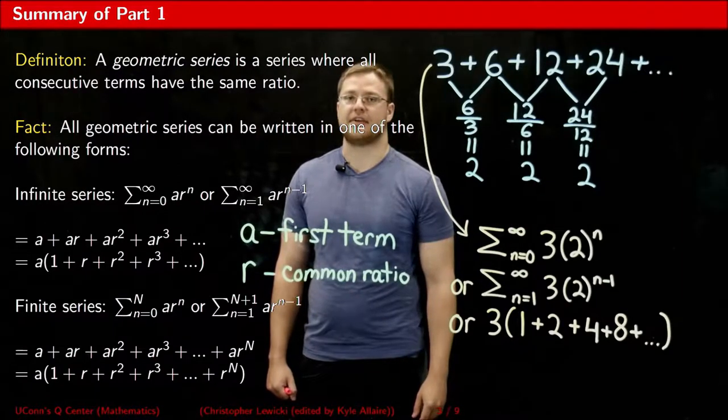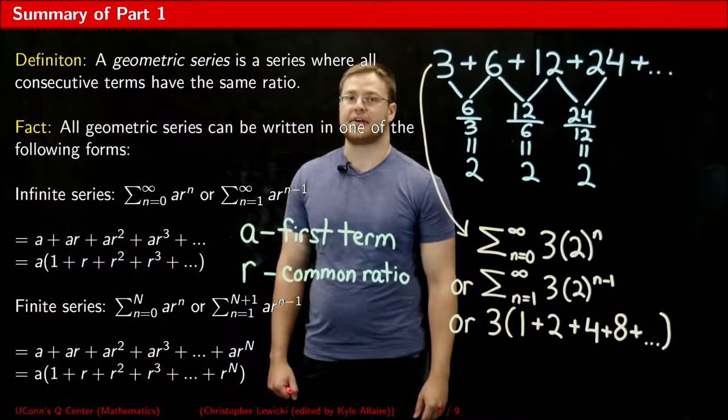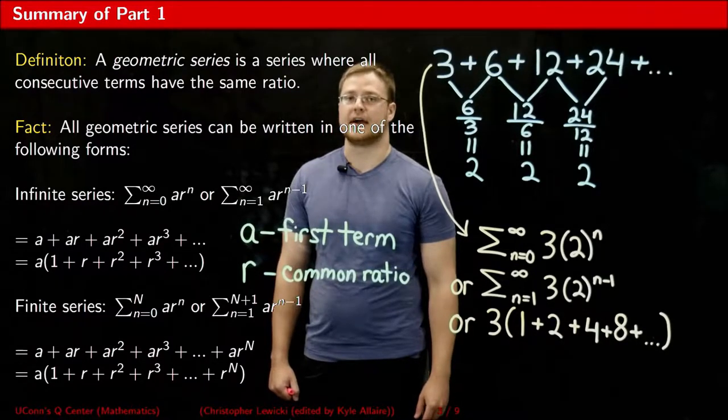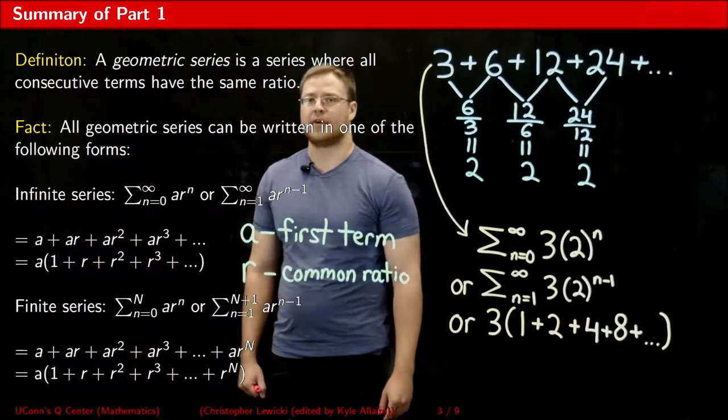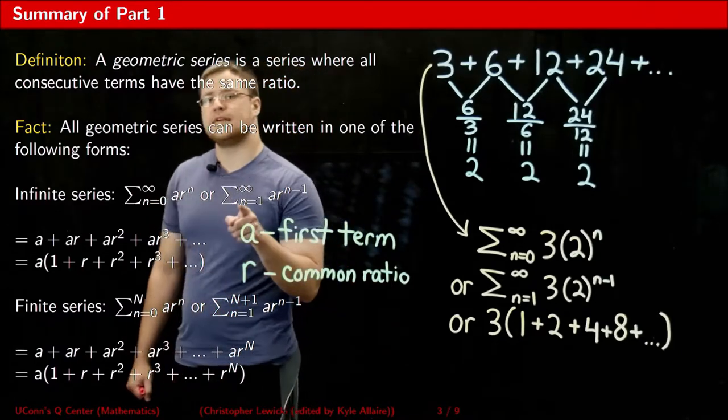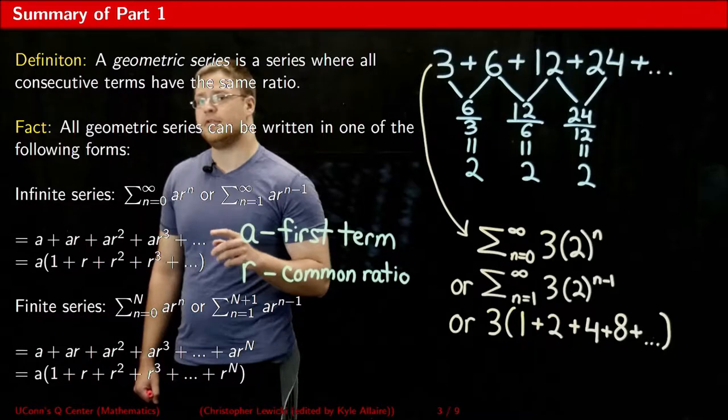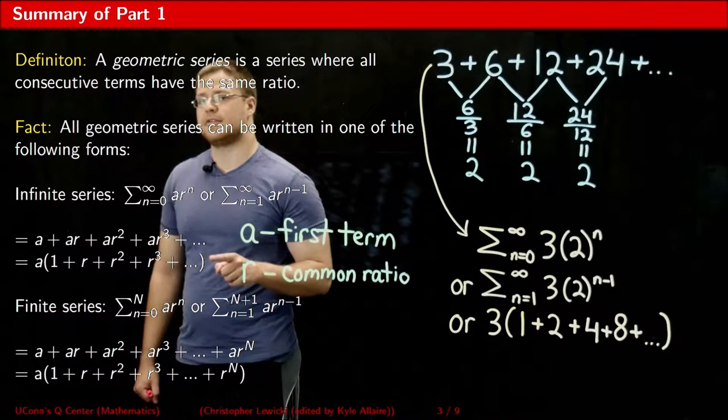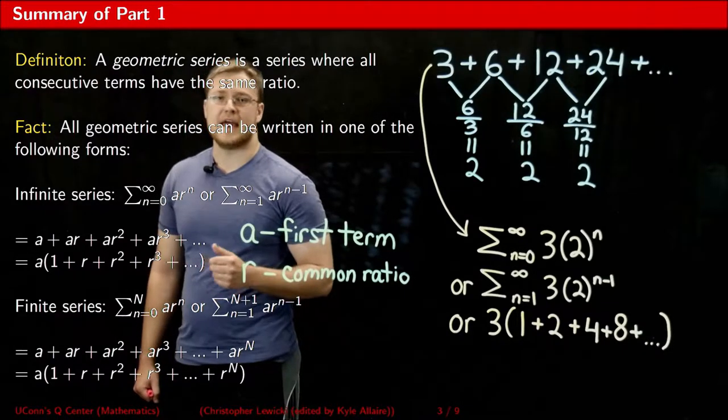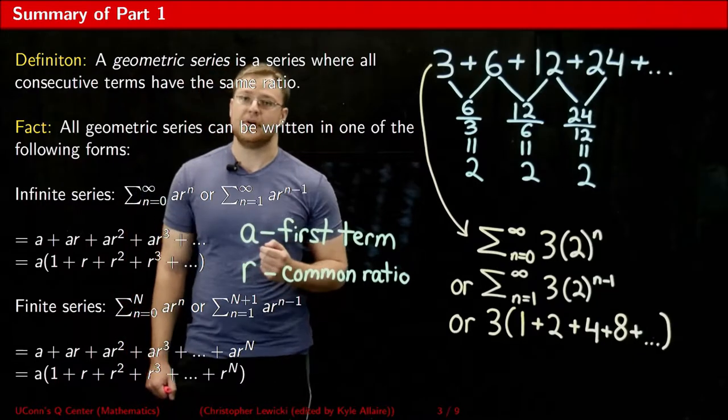Another important fact about geometric series is that any geometric series, whether it's infinite or finite, could be written one of four ways. It could be written in one of these two sigma notation ways, or it could be written as the sum of its terms, or it could be written as the sum of its terms where the common a is factored out.